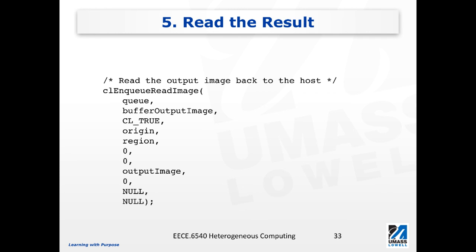Assuming the kernel completes successfully, the next step is to read the image back. We use CL_enqueue_read_image, since we are dealing with an image object. It is quite similar to enqueue_read_buffer — it takes the command queue as the first argument, the output image object, CL_TRUE to indicate blocking until the operation is completed, the origin and region parameters used when creating the image object, and the host-side buffer to store the image data.